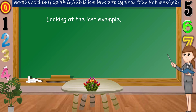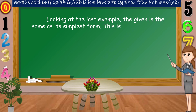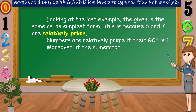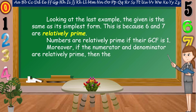Looking at the last example, the given is the same as its simplest form. This is because 6 and 7 are relatively prime. Numbers are relatively prime if their GCF is 1. Moreover, if the numerator and denominator are relatively prime, then the given ratio is already in simplest form. I hope that you understand our lesson for today.